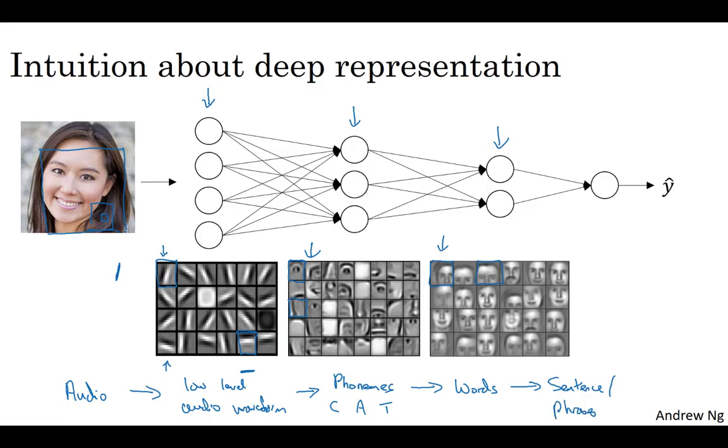So deep neural network with multiple hidden layers might be able to have the earlier layers learn these low-level simpler features, and then have the later deeper layers then put together the simpler things that's detected in order to detect more complex things, like recognize specific words or even phrases or sentences that you're uttering in order to carry out speech recognition.